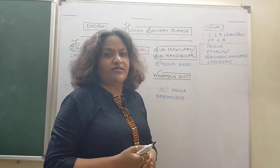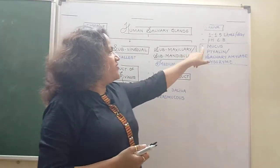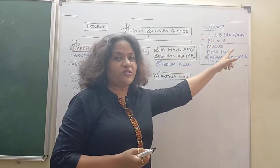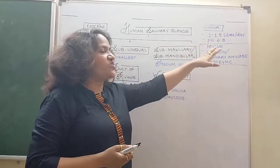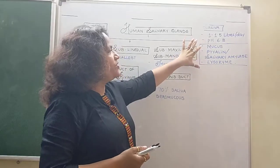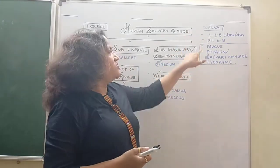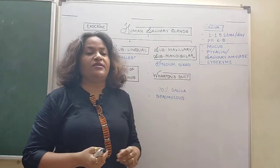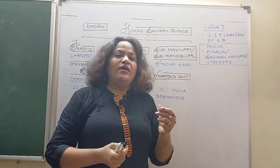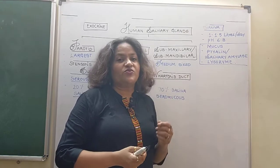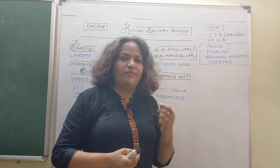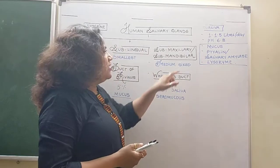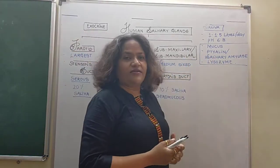Saliva secretion is one to one point five liters per day, pH is six point eight, and its components are mucus, ptyalin, and lysozyme. Mucus helps in moistening the food and makes the swallowing process easy because it is slightly slimy, facilitating deglutition — that is, swallowing.